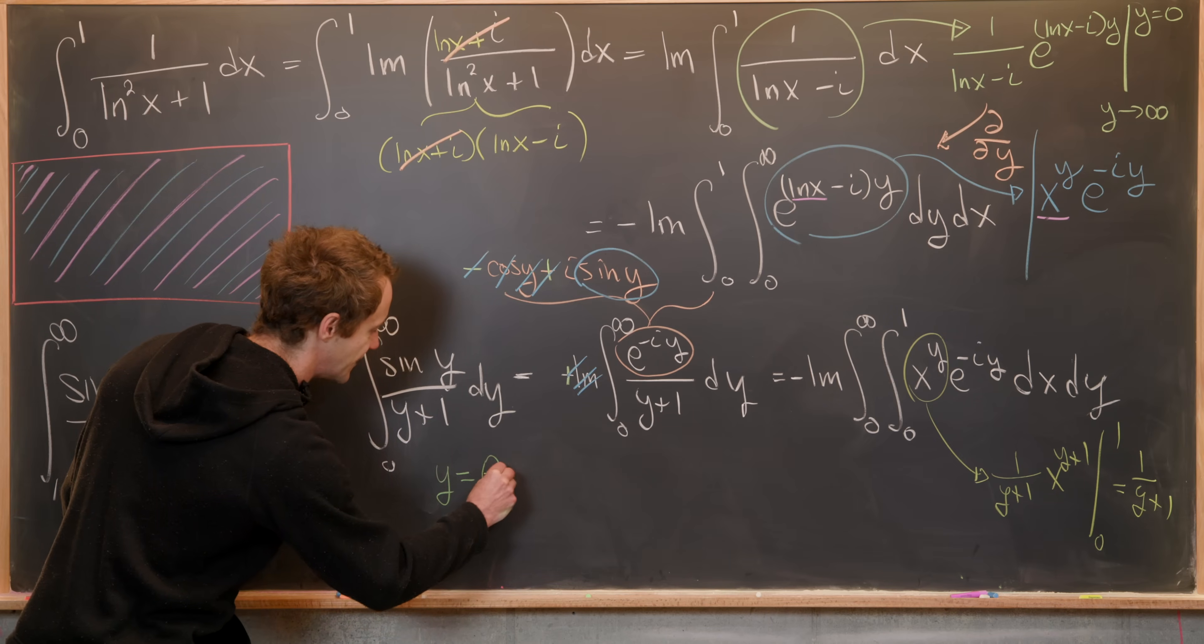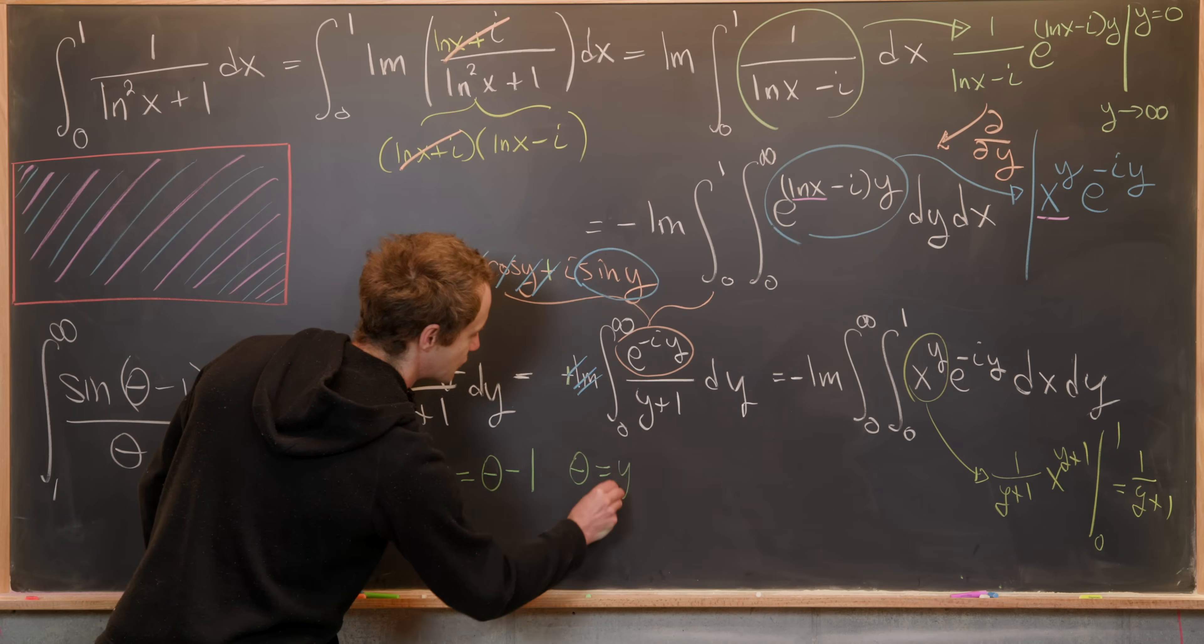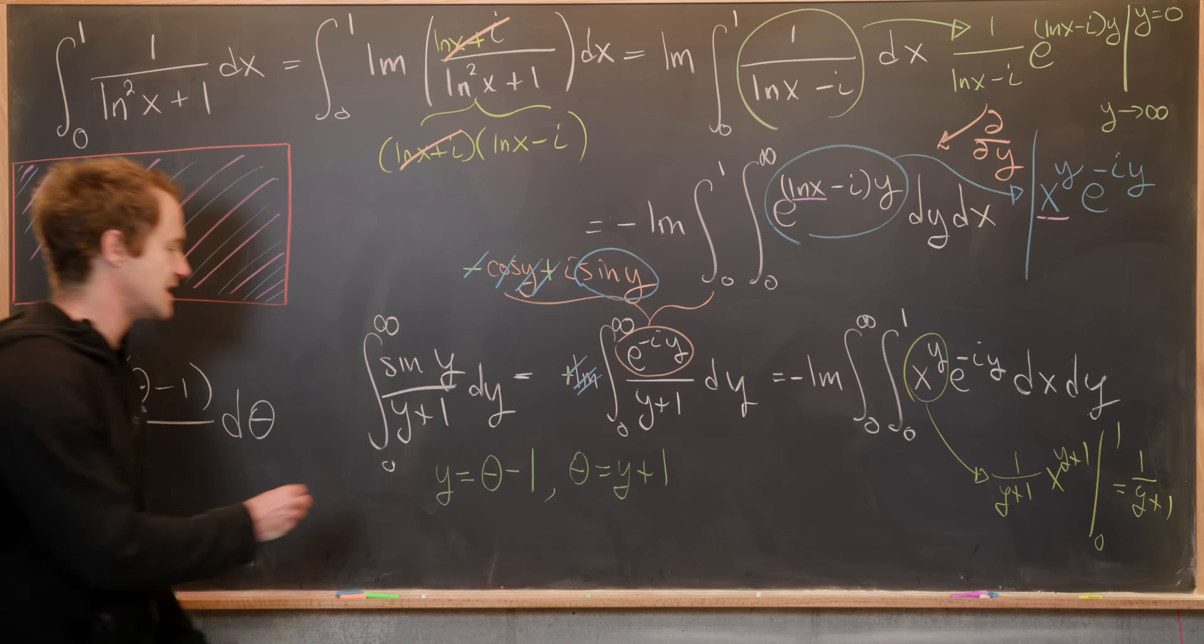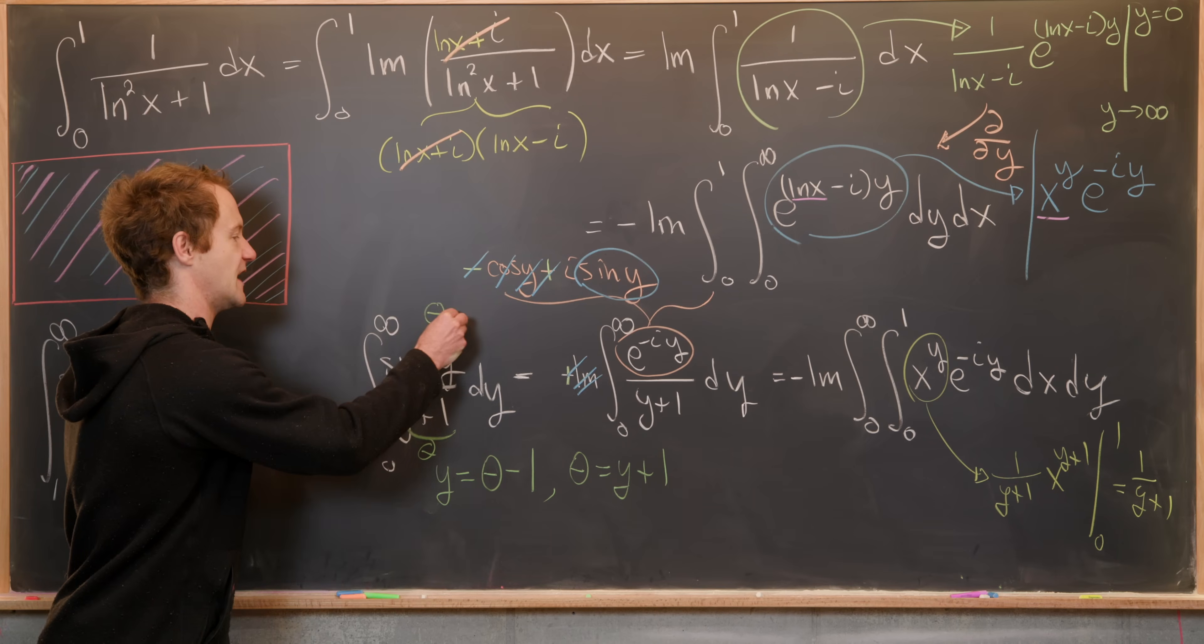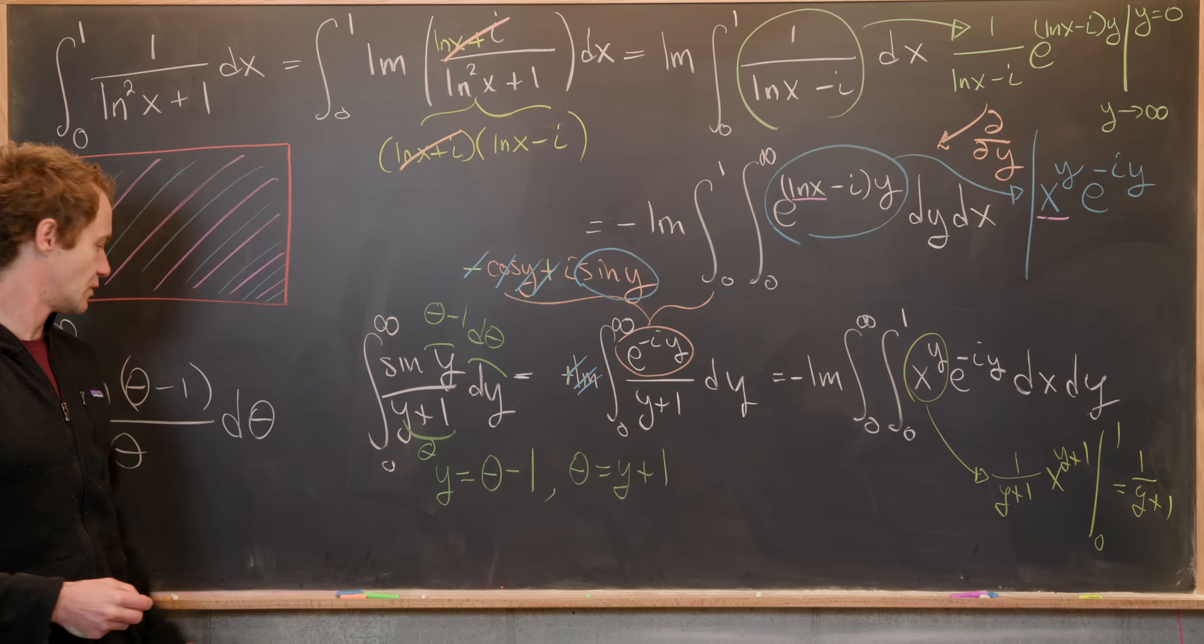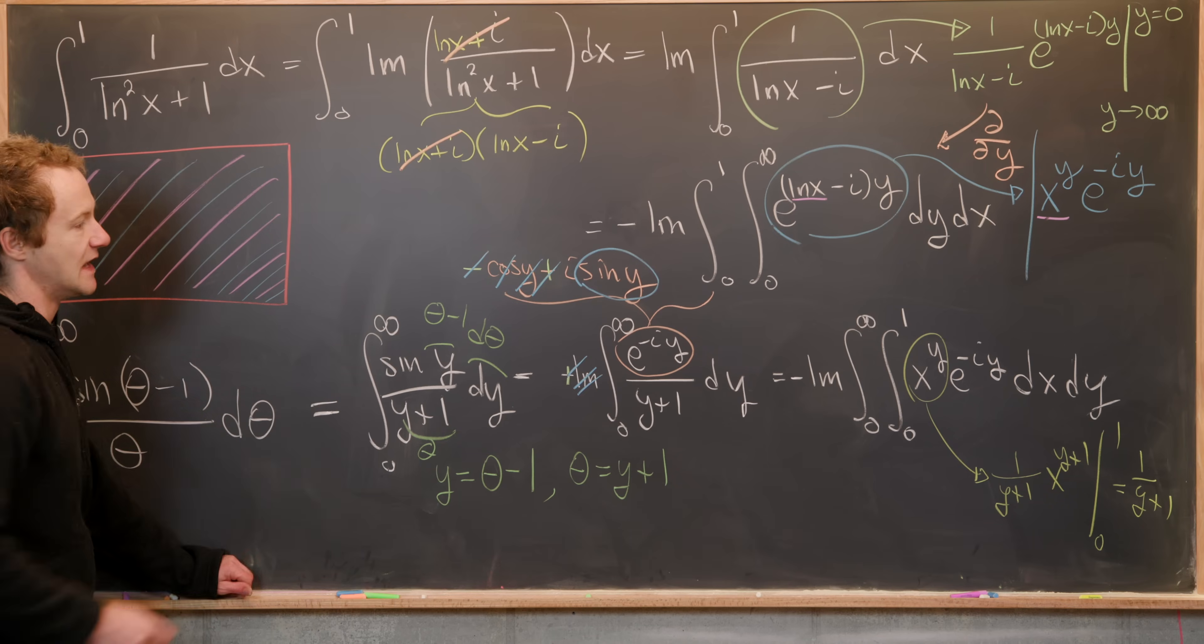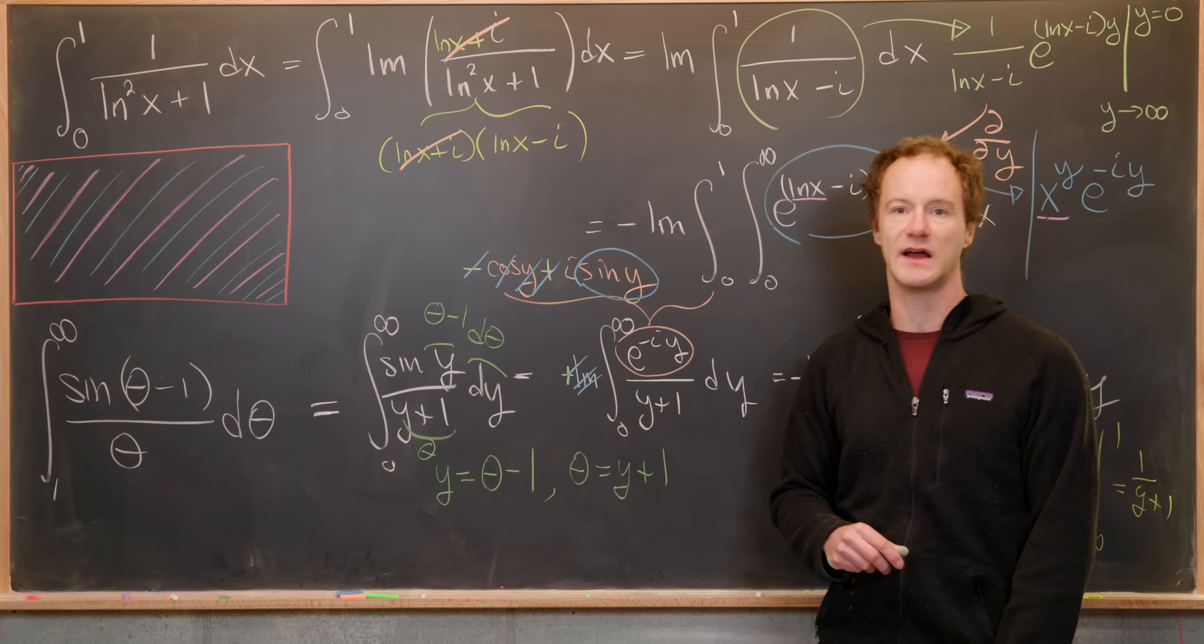At this point, we can make one more very simple substitution—it's maybe the simplest step of the whole integral. We'll set y equal to θ - 1, which is the same thing as saying θ is equal to y + 1. So that means this thing down here becomes θ, this y becomes θ - 1, this dy becomes dθ. And then the lower bound of integration will change to one, and the upper bound of integration will stay at infinity. And so we've closed our loop on this beautiful integral identity. And that's a good place to stop.